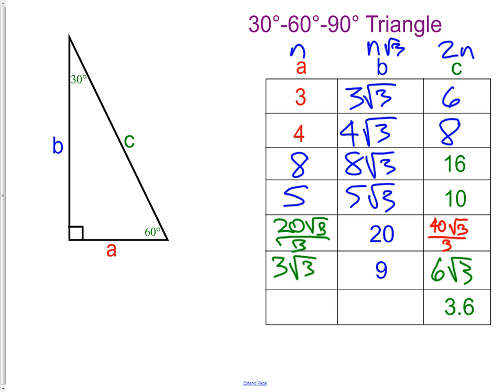Lastly, when we have a decimal, we can just go ahead and create these as a decimal number, or leave it as a simplified radical. Half of 3.6 is 1.8.